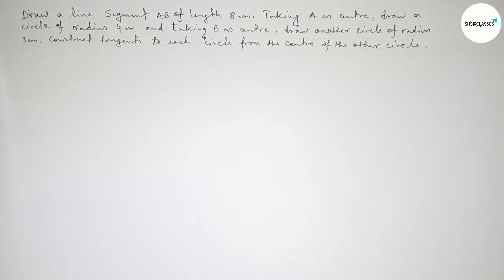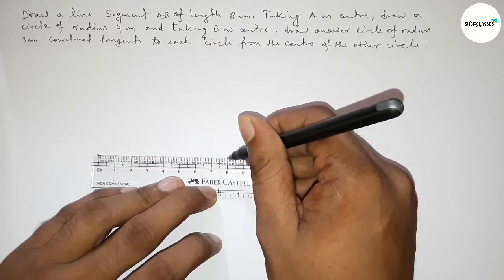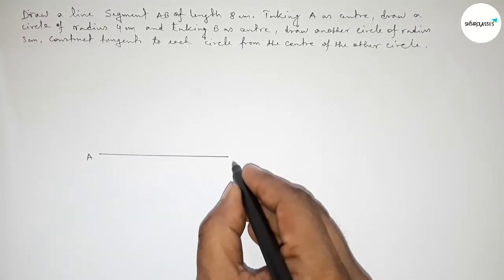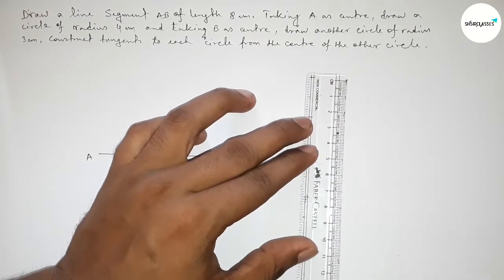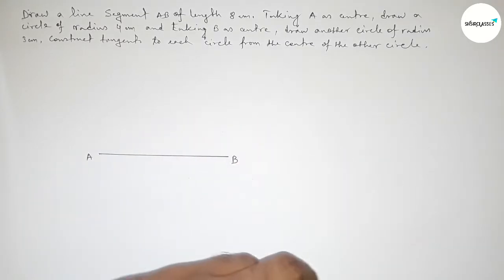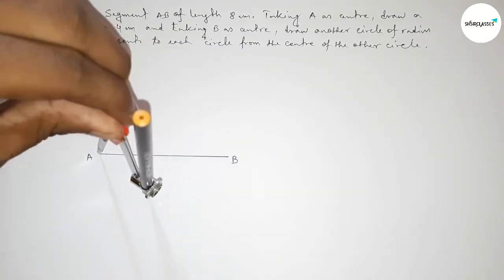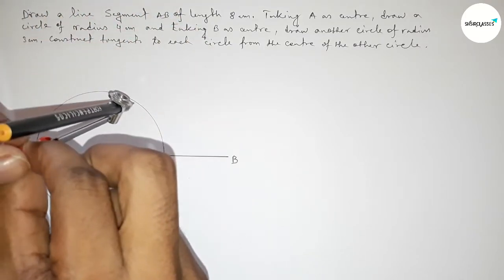First, we draw line AB equal to 8 centimeters. Taking point A on the left and point B on the right. Now we draw a circle of radius 4 centimeters on point A. Taking 4 centimeters using the scale, putting the compass on point A, and drawing a circle with radius 4 centimeters.